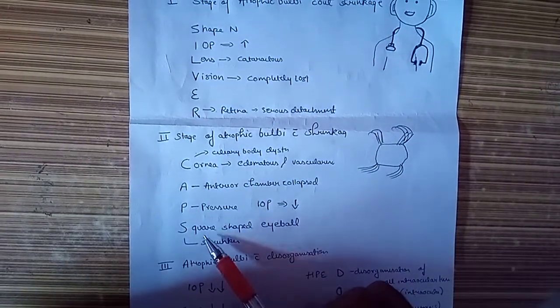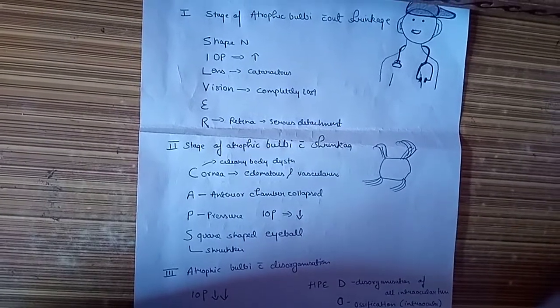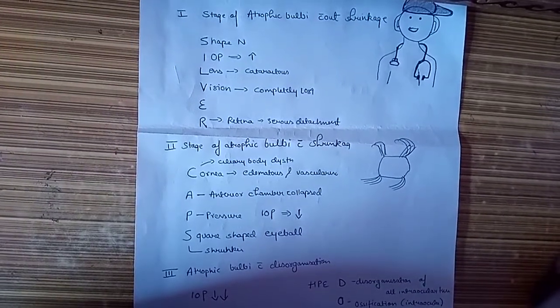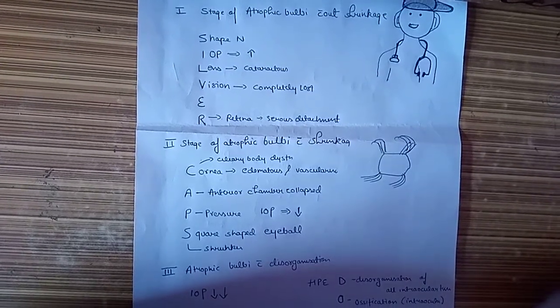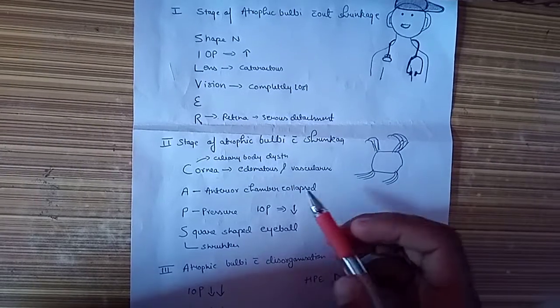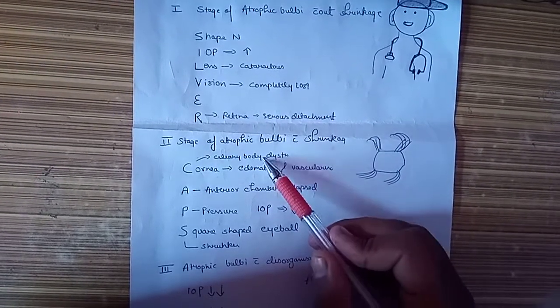C for cornea: here ciliary body has undergone dysfunction, so due to dysfunction of ciliary body, aqueous production has diminished. Now IOP will be lower due to ciliary body dysfunction, and cornea will have edema and will be vascularized.